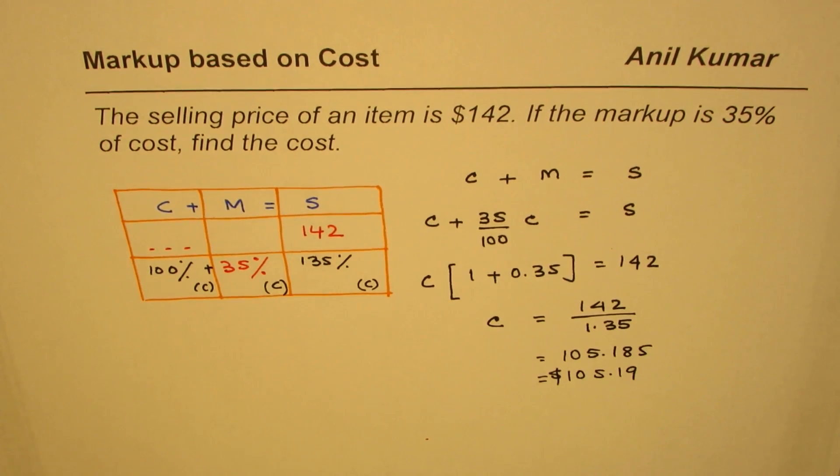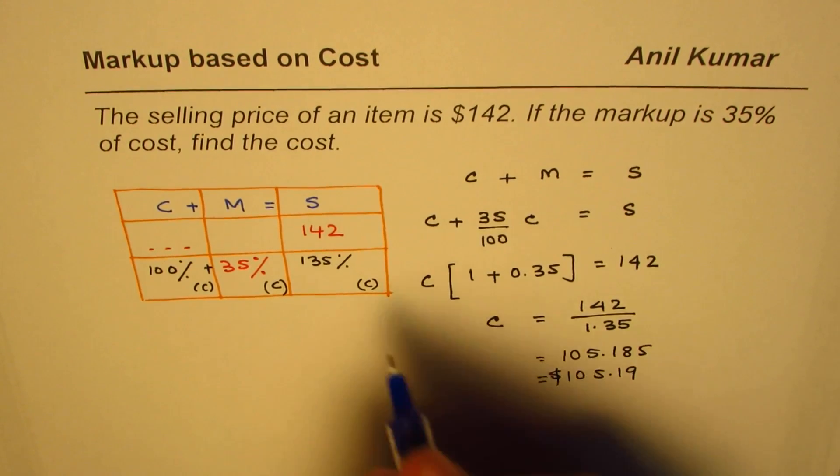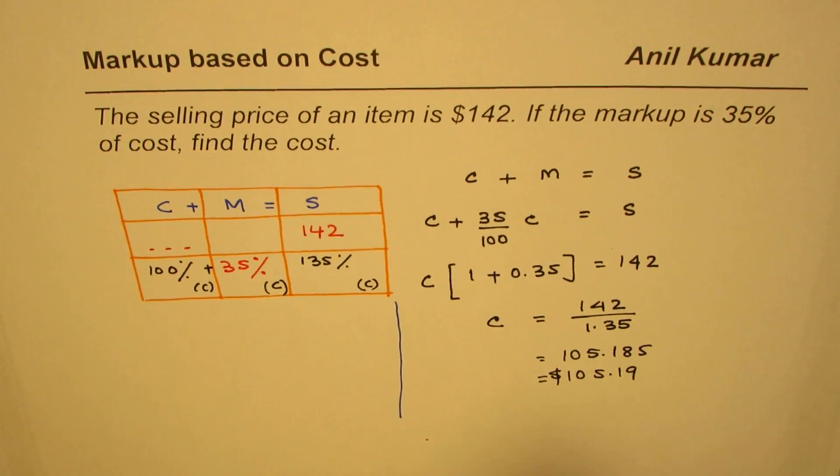That's a way of finding the cost when we are given the selling price. Now here is an alternate method. Let's look into the alternate method also.